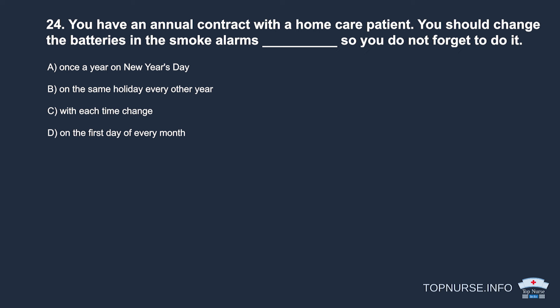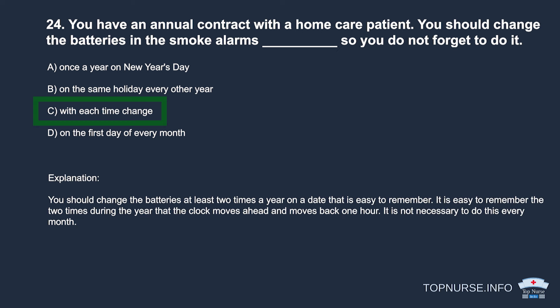Question 24: You have an annual contract with a home care patient. You should change the batteries in the smoke alarms _____ so you do not forget. a. Once a year on New Year's Day. b. On the same holiday every other year. c. With each time change. d. On the first day of every month. Correct answer: c. With each time change. You should change batteries at least twice a year — it is easy to remember the two times per year the clock moves ahead and back one hour. Monthly changes are not necessary.